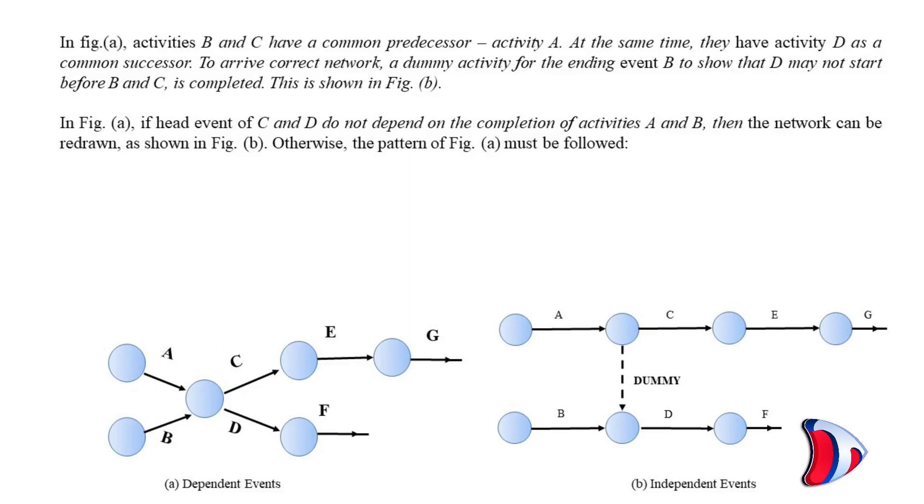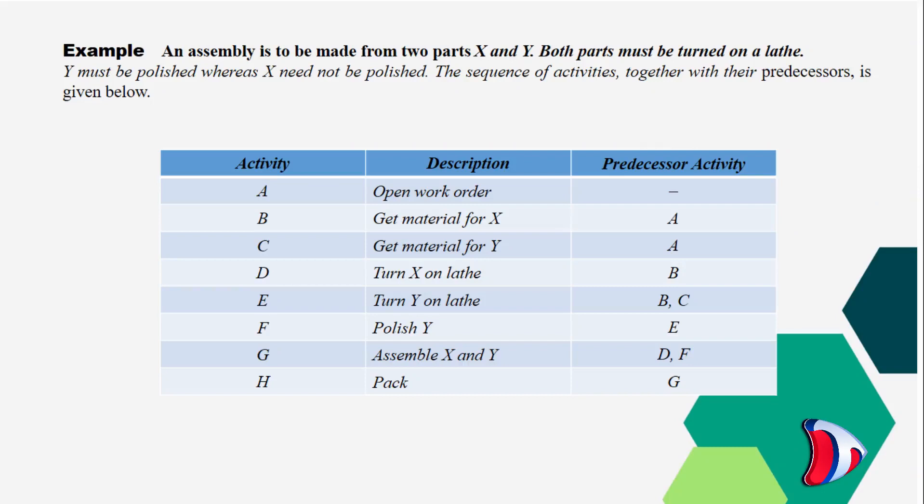Let us understand this with the help of an example. An assembly is to be made from two parts X and Y. Both parts must be turned on a lathe. Y must be polished whereas X need not be polished. The sequence of activities together with their predecessors is given below.